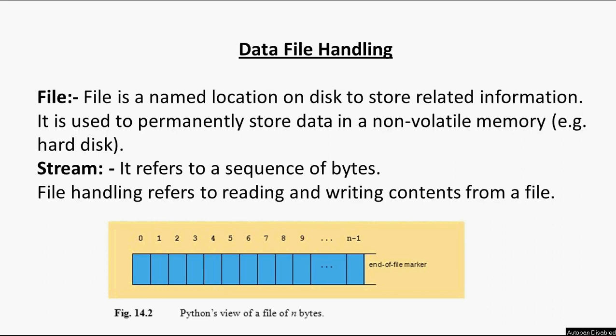We can define a file as a named location on disk to store related information. It is used to permanently store data in a non-volatile memory such as a hard disk or some other kind of disk, so that later on, or in some other program, we can refer to that data which we have already stored.